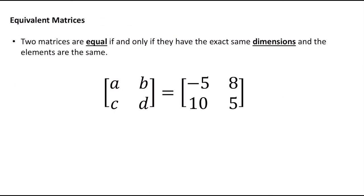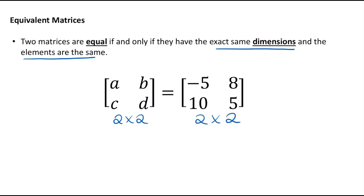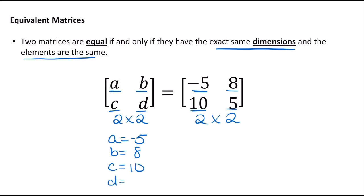Equivalent matrices: two matrices are equal if and only if they have the exact same dimensions and all elements are the same. These two matrices are equivalent because we have two 2 by 2 matrices. Corresponding elements are the same because position has meaning. So A equals negative 5 — both first row, first column. B equals 8 — both first row, second column. C equals 10 — second row, first column. And D equals 5 — second row, second column.